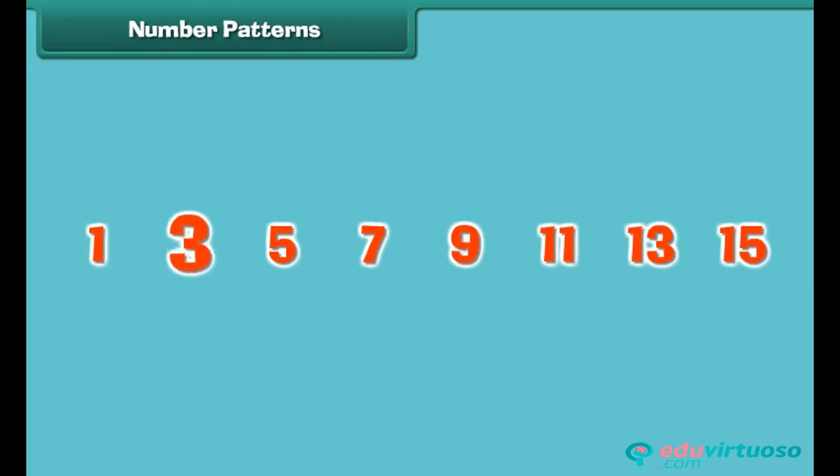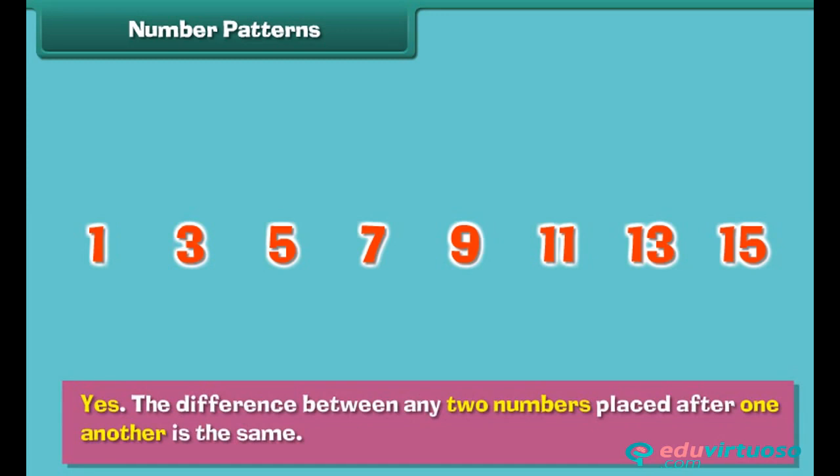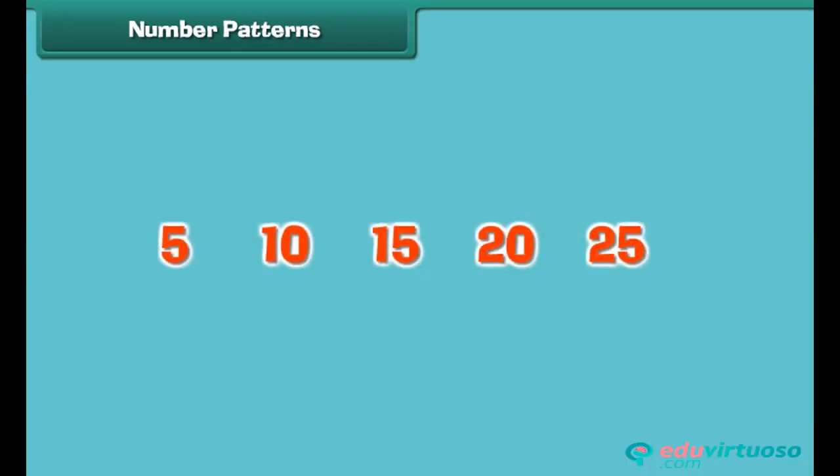One, three, five, seven, nine, eleven, thirteen, fifteen. The numbers are not the same. Still, we call it a pattern. Can you see why? Yes, the difference between any two numbers placed after one another is the same.